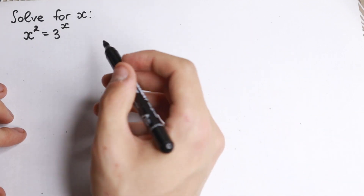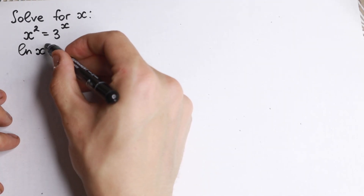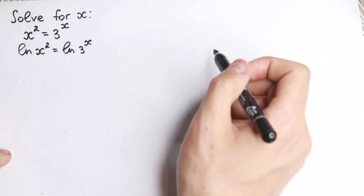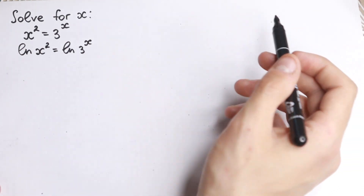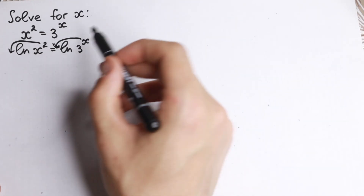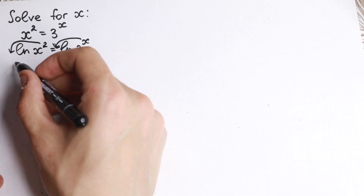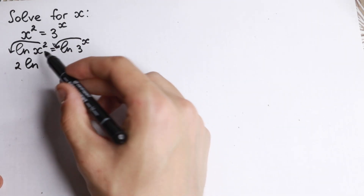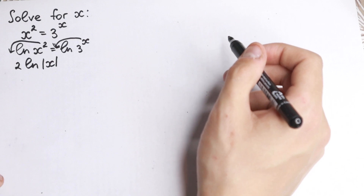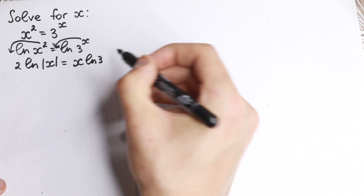So how can we solve it? Let's apply a natural log to both sides. Natural log of x² equals natural log of 3 to the x. We know a really useful property: we can bring these powers to the front. So on the left hand side we get 2, and on the right hand side we get x. We'll have 2 times natural log of absolute value of x — because x² can be positive or negative — equal to x times natural log 3.